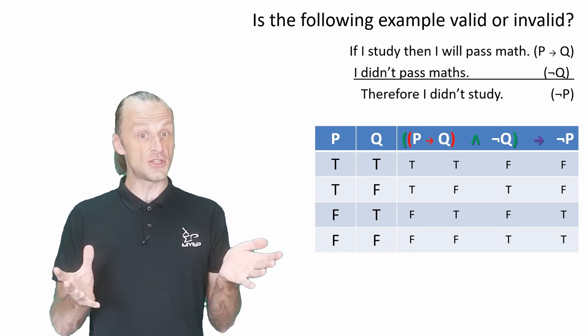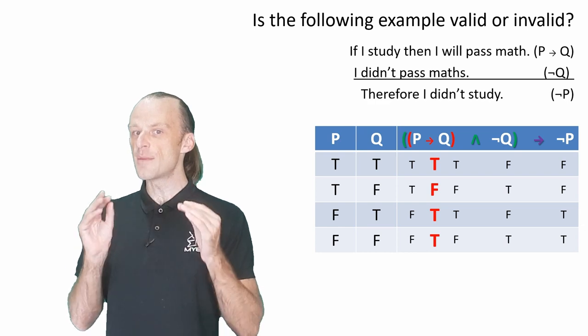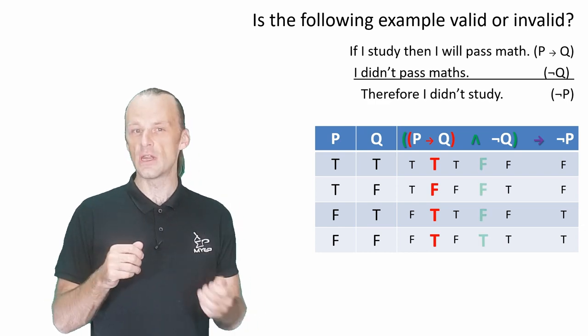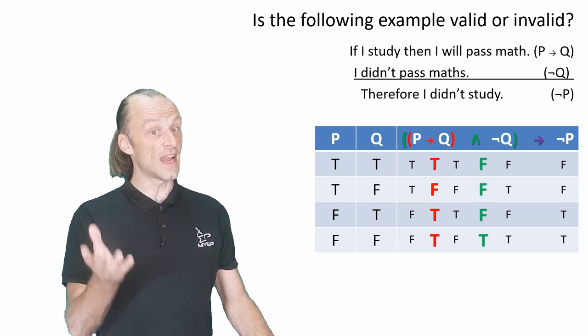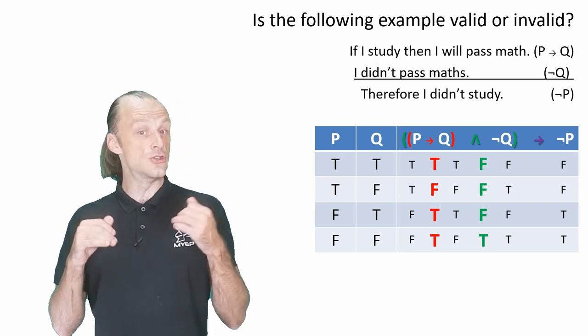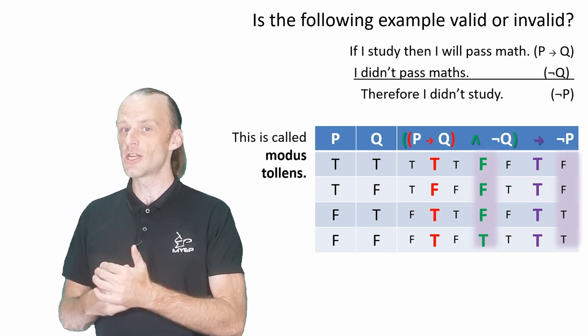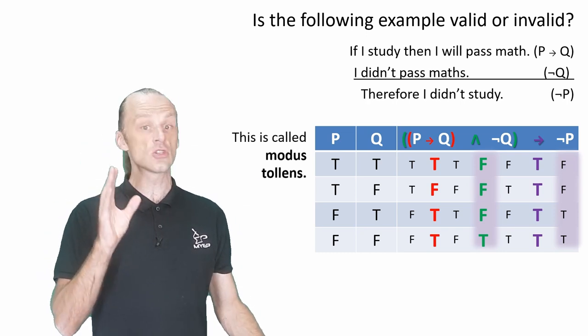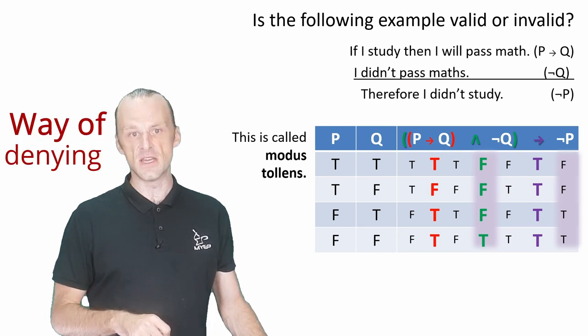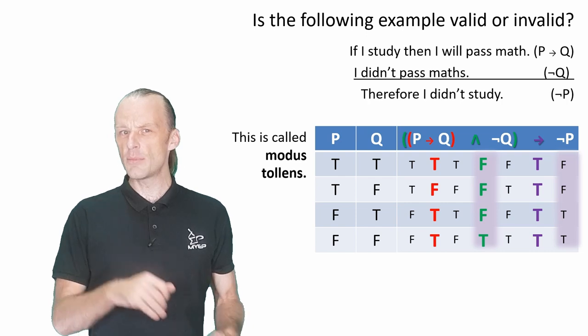We start again with a conditional for premise one, and then make that a conjunction with premise two, which is a negation. This gives the outcome of the left-hand side. Put this in conditional with the conclusion not P, and that gives us our outcome. And again, we have a tautology. This is called modus tollens, or way of denying, and it is a valid argument.